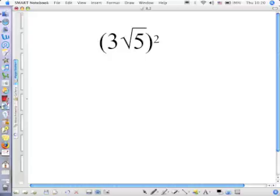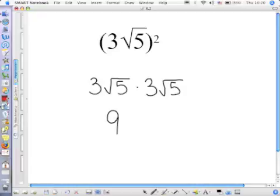Now, be careful with these. If you have 3, which is a whole number, times the square root of 5, and the whole thing is squared, this means we have to square 3. So we've got 3 times the square root of 5 times another 3 times the square root of 5. 3 times 3 is 9, and the square root of 5 times the square root of 5 is 5. So the answer is 45.